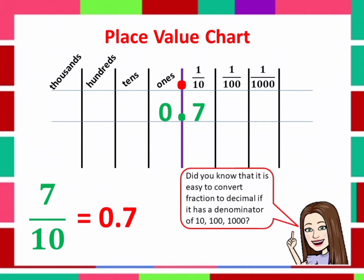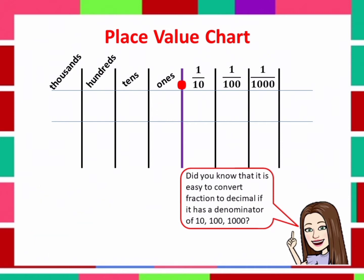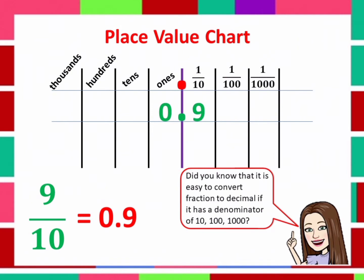Another one is 9 over 10. It is found in the place value chart as this. Therefore, 9 over 10 is equal to 0.9.